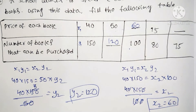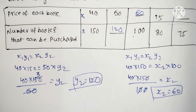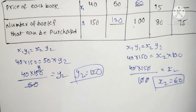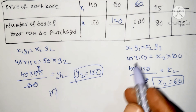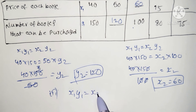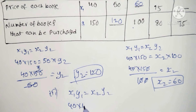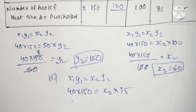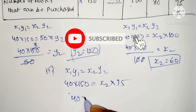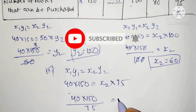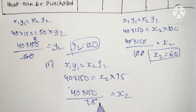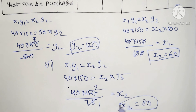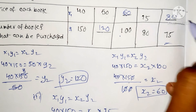For the next one, y2 is equal to 75. Using x1 y1 = x2 y2: 40 into 150 equals x2 into 75. So x2 equals 40 into 150 divided by 75, which simplifies to 40 into 2, giving x2 equal to 80.